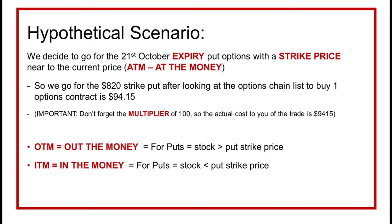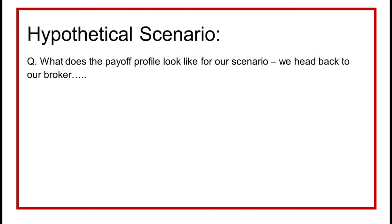We're going to go for the at-the-money strike price — the closest to the current stock price. Out of the money (OTM) for puts means the stock price is greater than the put strike price. In the money means the puts are already making money and the stock price is less than the put strike price. You might think the stock price is going to move massively down, so you might go for more out-of-the-money puts which will be cheaper but less likely to pass the strike price. For this example, we'll simply go for the at-the-money strike price with the October expiry.